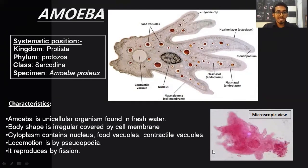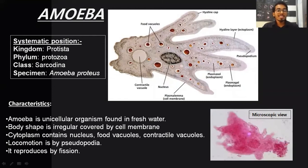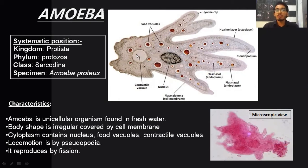When the amoeba is stained, if you observe the permanent slides, the amoeba looks like this — this is the microscopic view of amoeba. Now, characteristics of amoeba: amoeba is a unicellular organism found in fresh water. The body is irregular, covered by a cell membrane. The cytoplasmic content consists of a nucleus, food vacuoles — whatever food it has engulfed forms the food vacuoles — and one more circular structure called the contractile vacuole, which helps in osmoregulation, maintaining or liberating excess water content from the body.